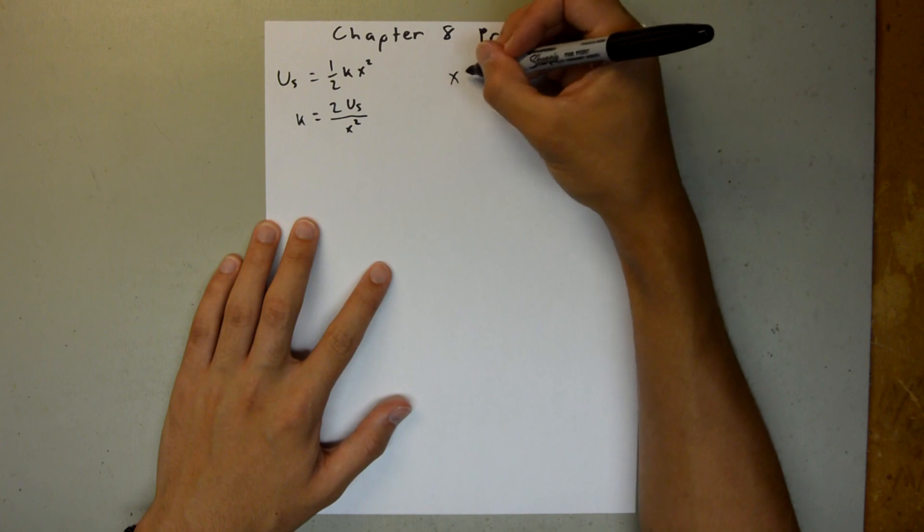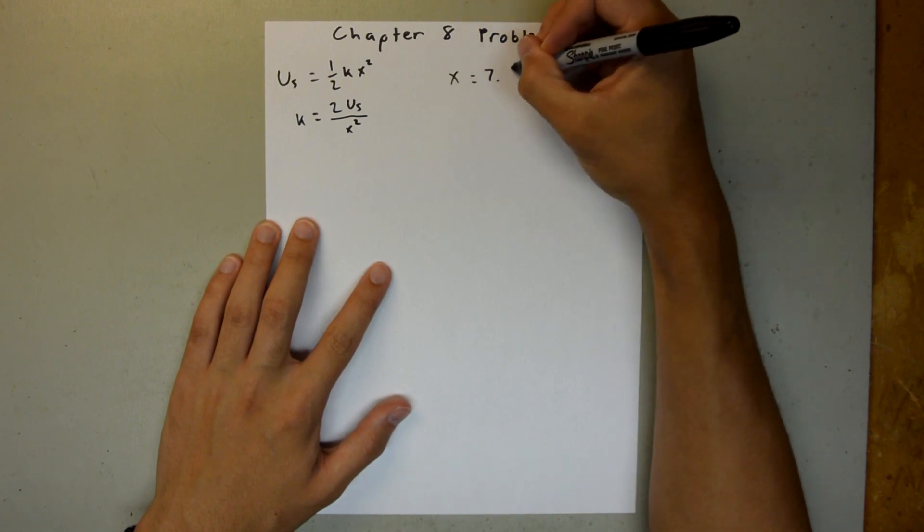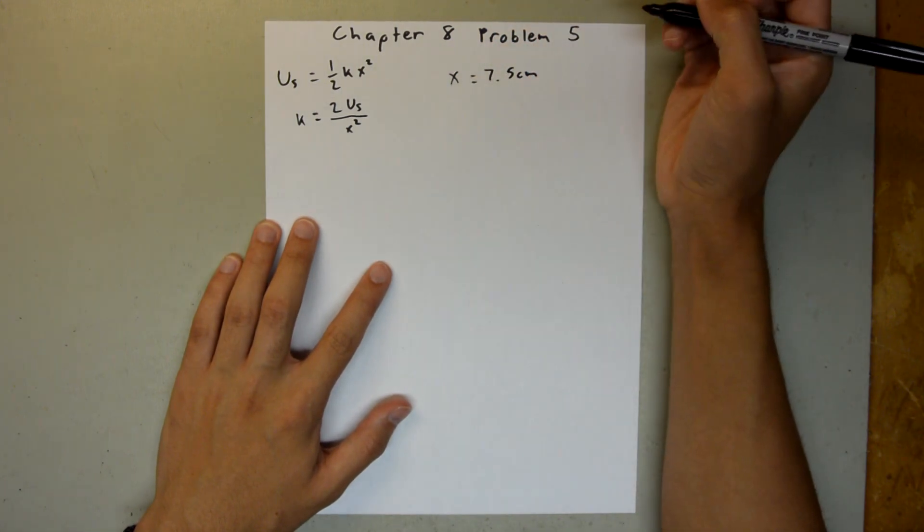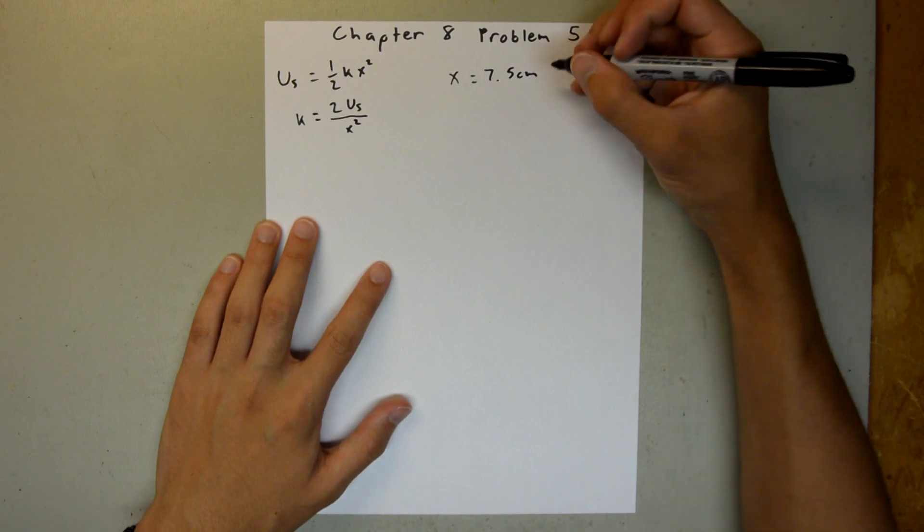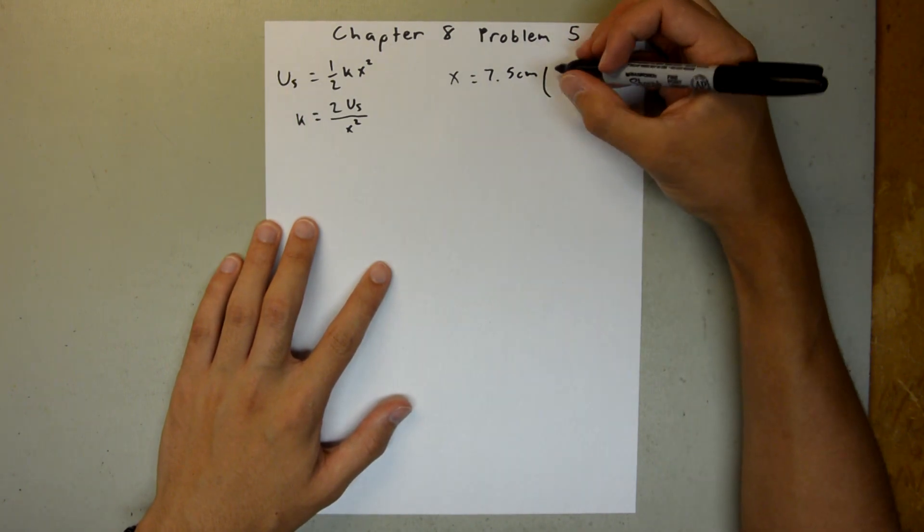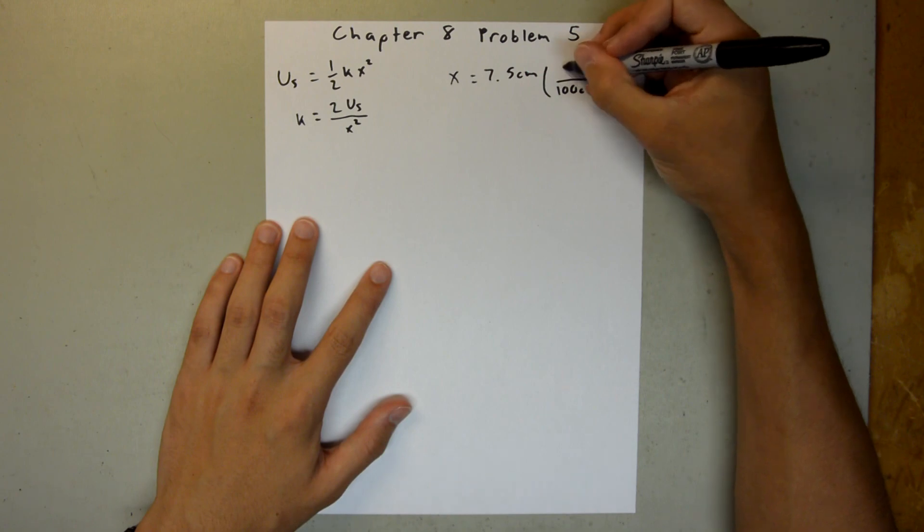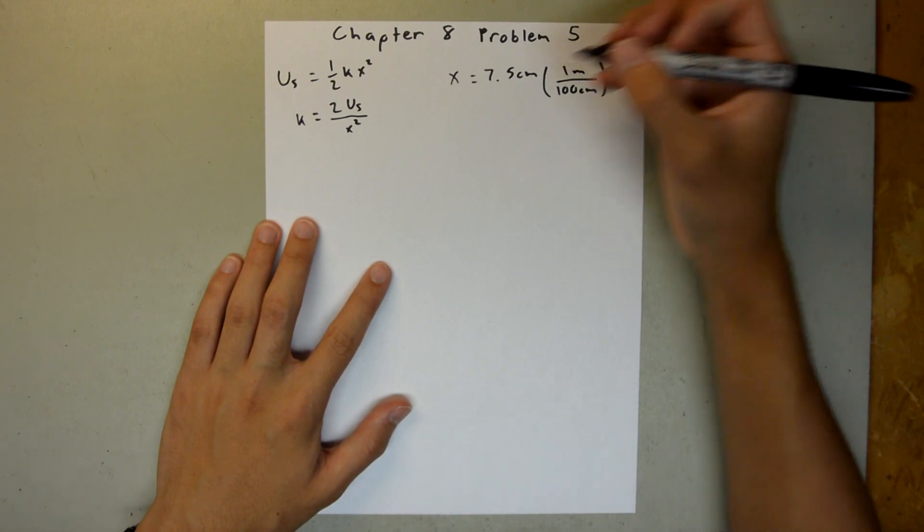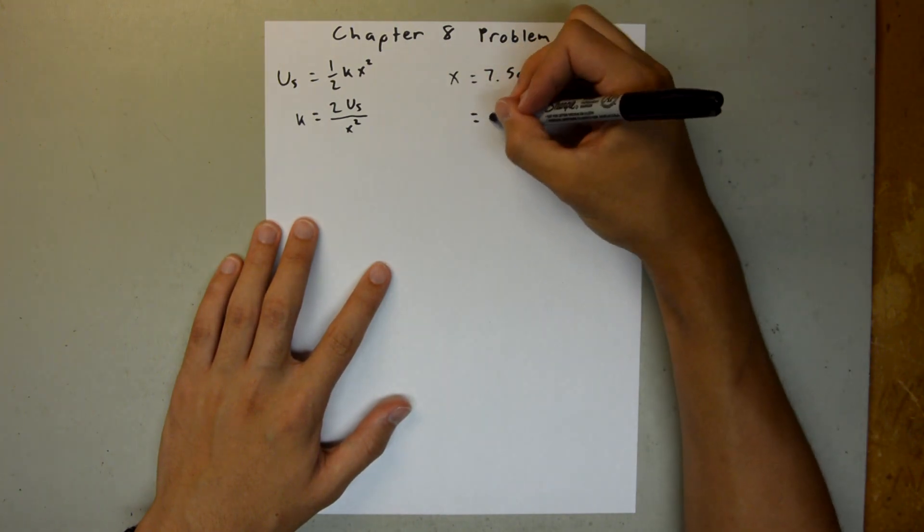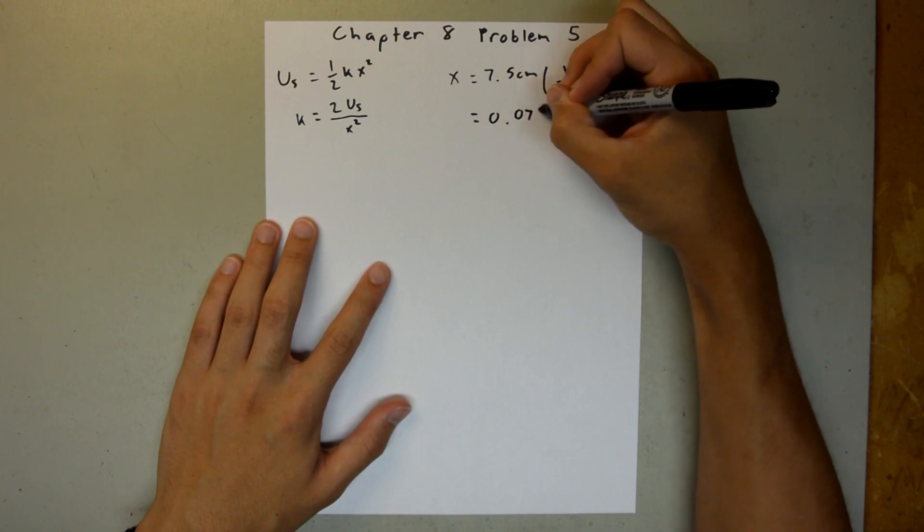In the problem, we are given x is equal to 7.5 centimeters, but we need to convert that to meters. We know that there are 100 centimeters in 1 meter, and that is going to be equal to 0.075 meters.